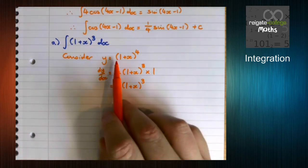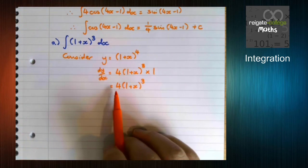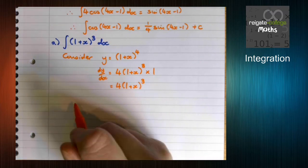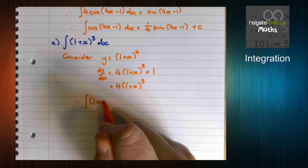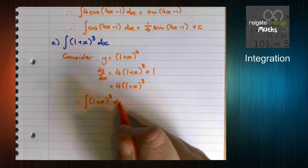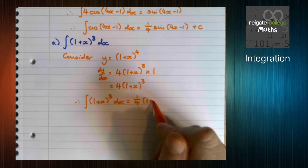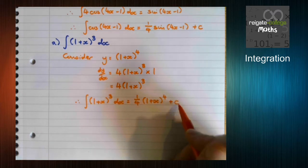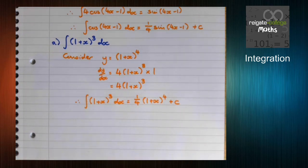So if we differentiate 1 plus x to the 4, we get 4 times 1 plus x cubed, which means when we integrate 1 plus x all cubed, we get a quarter 1 plus x to the 4 plus c. But again, this line here is the only line we'd expect to see.